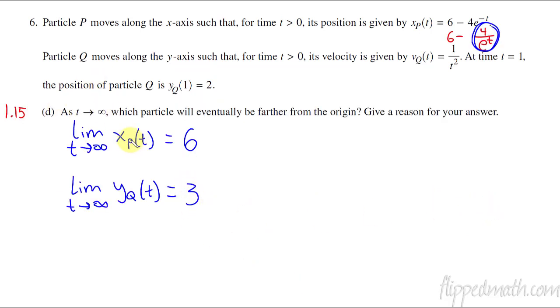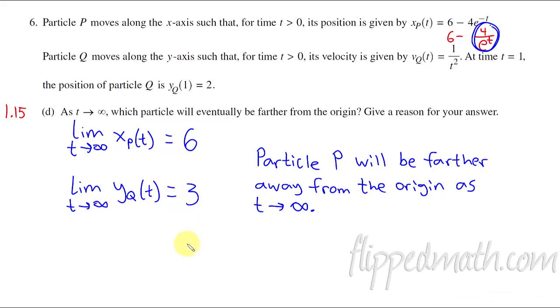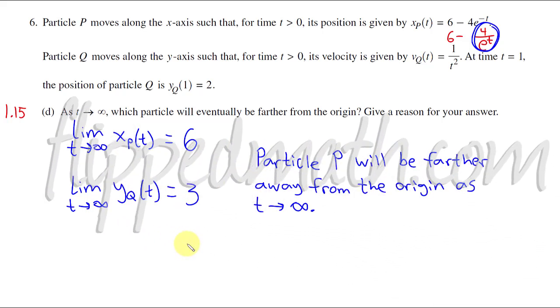So which one is going to be further away? The particle P is. So I'm just going to say the particle P will be farther away from the origin as t approaches infinity. And there's my work that showed that. Okay, hopefully this helped you get through this problem. This is Mr. Bean signing off.